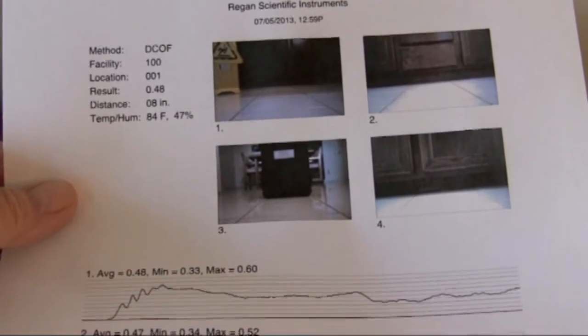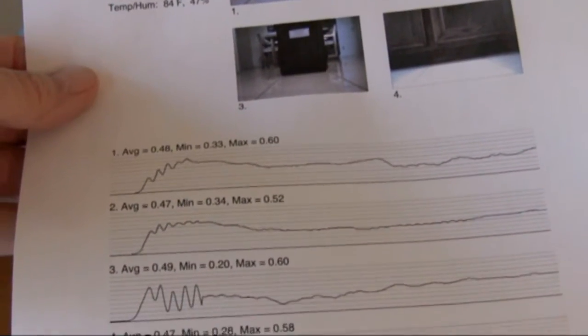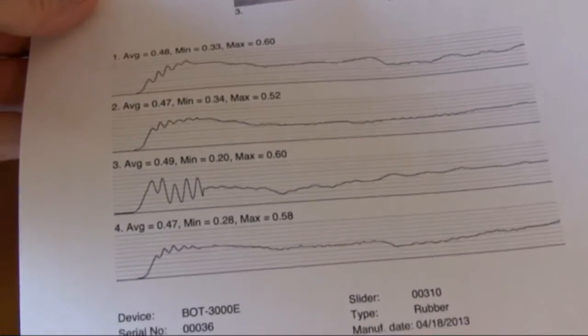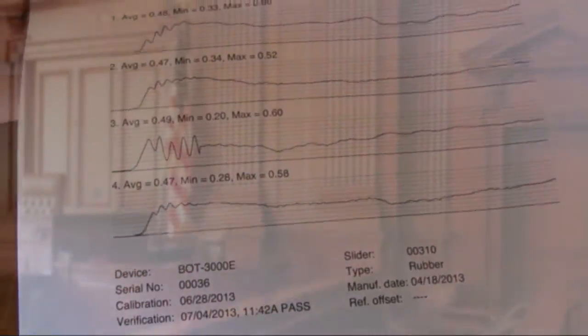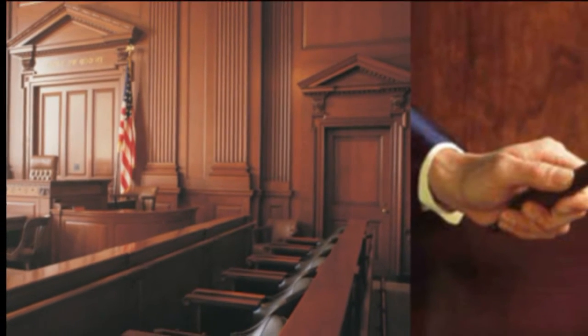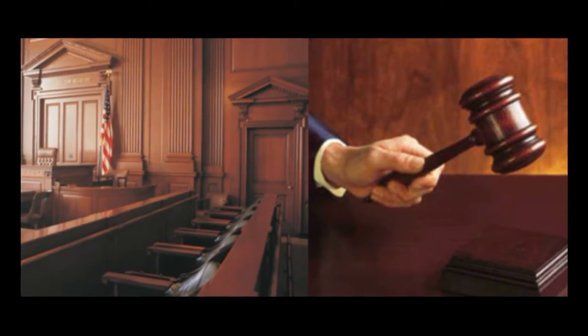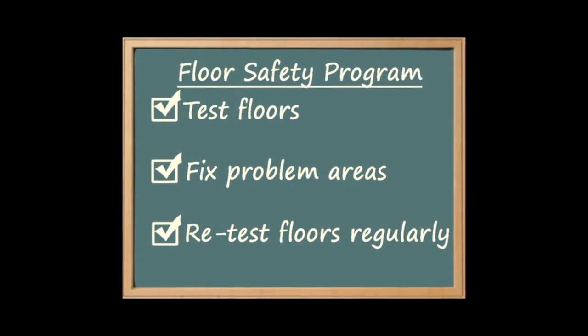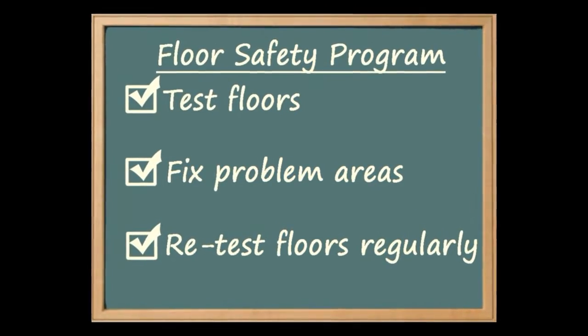This report includes all the graphs, the photos taken automatically during the test runs, temperature and humidity readings, average COF, date, time, and everything else relevant to the test, which gives courtroom credibility and helps show that the property owner has done everything reasonably practicable to prevent slip hazards.